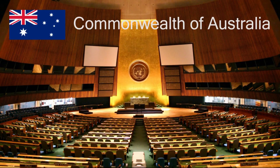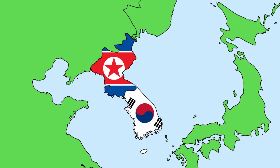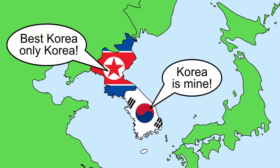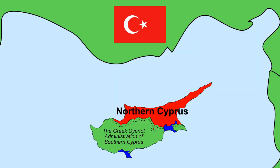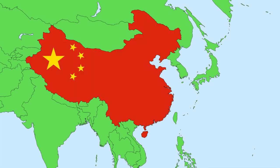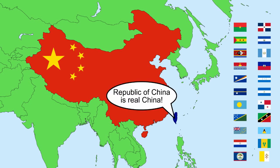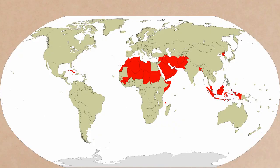Well, Australia is one of the 193 members of the United Nations. Although, just because a country is a member of the UN doesn't necessarily mean that all other members agree that that country is a country. For example, North and South Korea don't recognise each other, both believing themselves to be the legitimate government of all of Korea. Turkey doesn't recognise Cyprus, because of the situation with Northern Cyprus. Even the most populated country in the world, the People's Republic of China, isn't recognised by 22 UN members, who recognise the Republic of China as the legitimate government of China, confined to the island of Taiwan. And the least recognised UN member, with 32 fellow members not recognising them as a country — Israel.